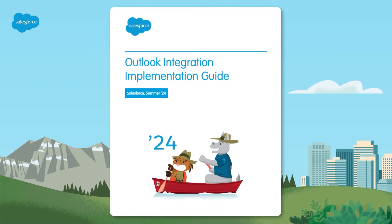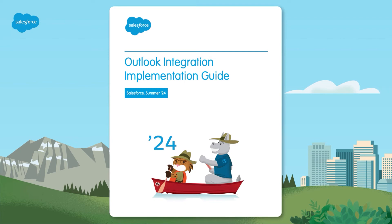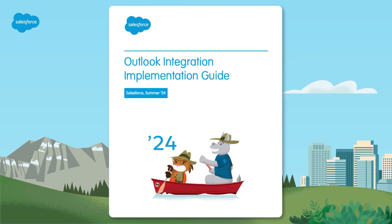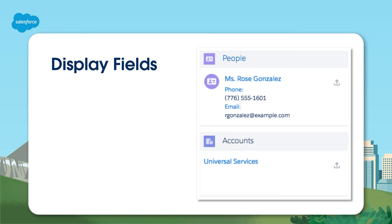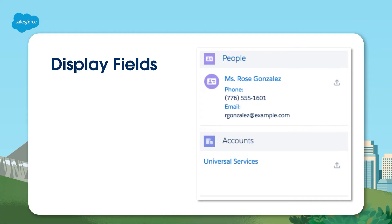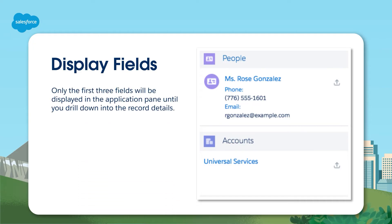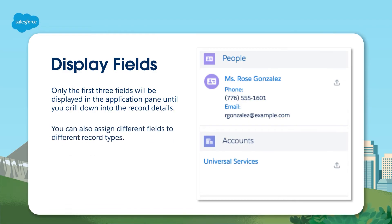Ready to customize the application pane so that your reps get the most out of the integration? You can tailor the Outlook Integration pane to better fit your reps' workflow and your company's processes. For example, depending on your end user needs, you might want to customize the application pane by showing different fields. You can configure this using the Compact Layout setting in Salesforce Setup. Remember that only the first three fields will be displayed in the application pane until you drill down into the Record Details, and you can also assign different fields to different record types.